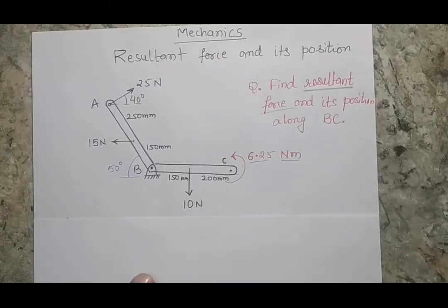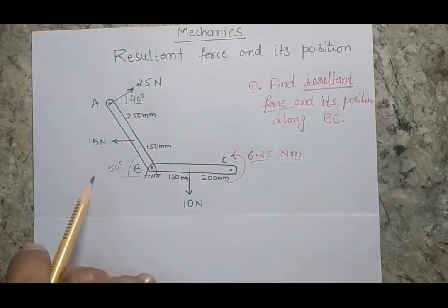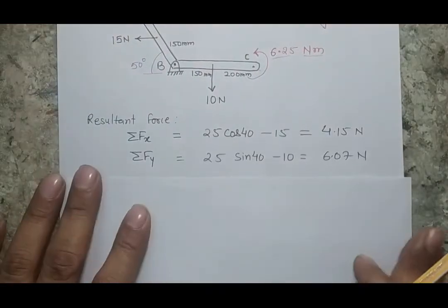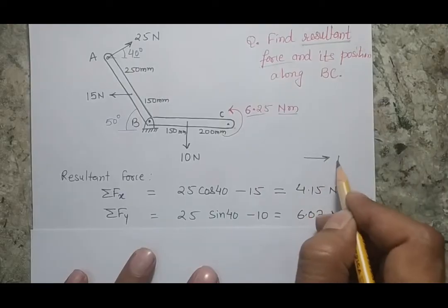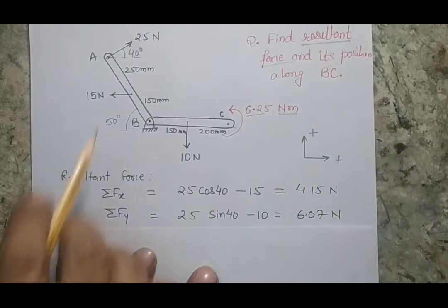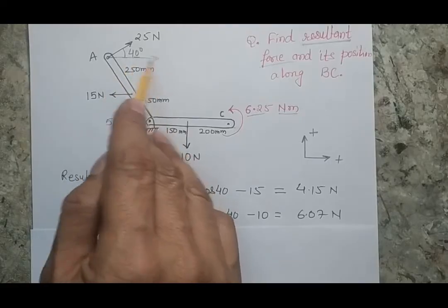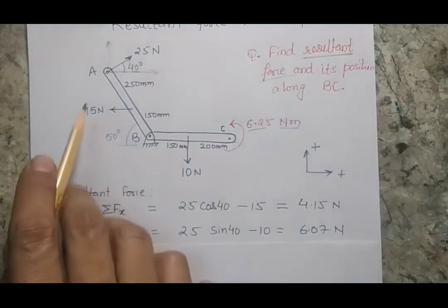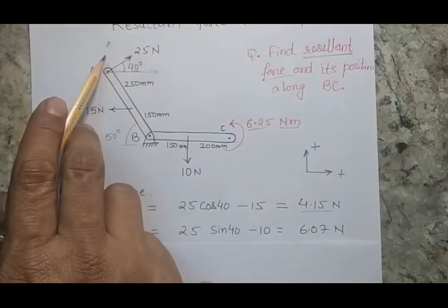The first step to solve the problem is to find the resultant force. There are horizontal forces as well as vertical forces. To get the resultant, I have to find the total horizontal and total vertical force. Taking right and upward as positive directions: 25 cos 40 is acting towards the right, 15 is acting towards the left, so the net horizontal force is 4.15. The vertical force is 25 sin 40 minus 10.